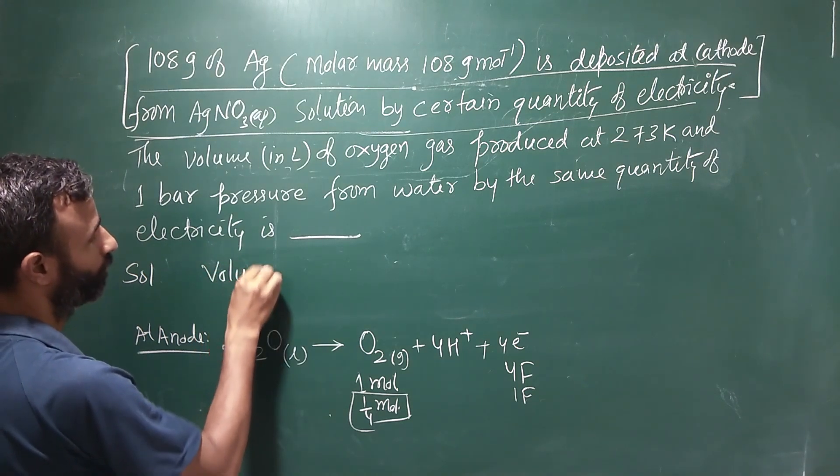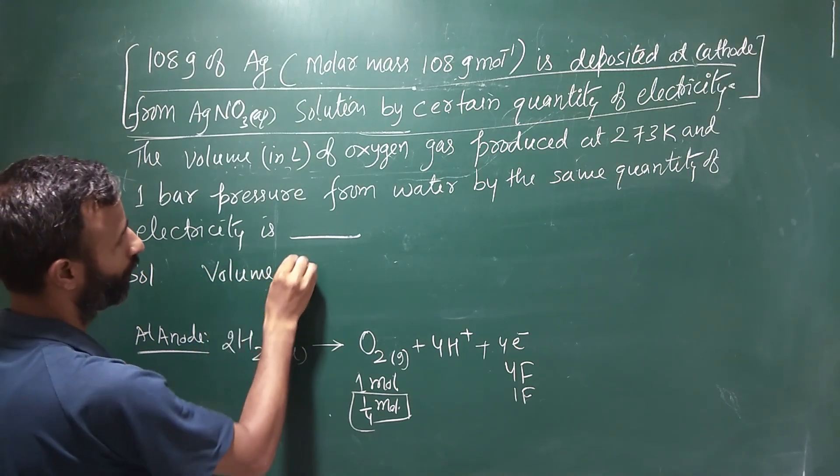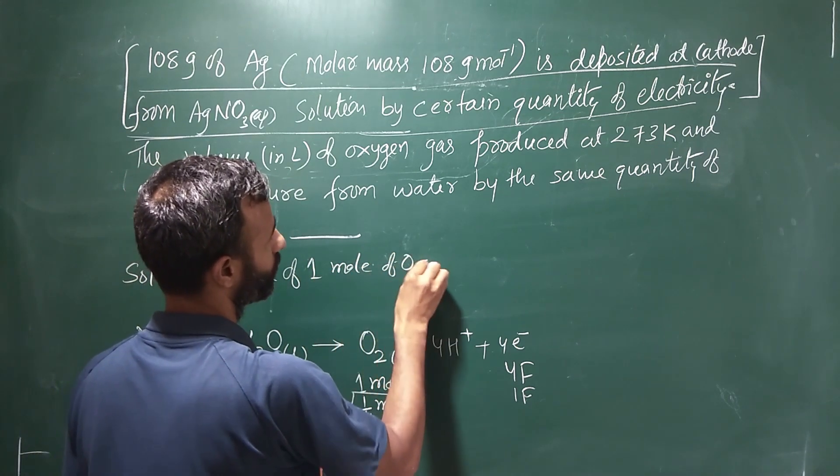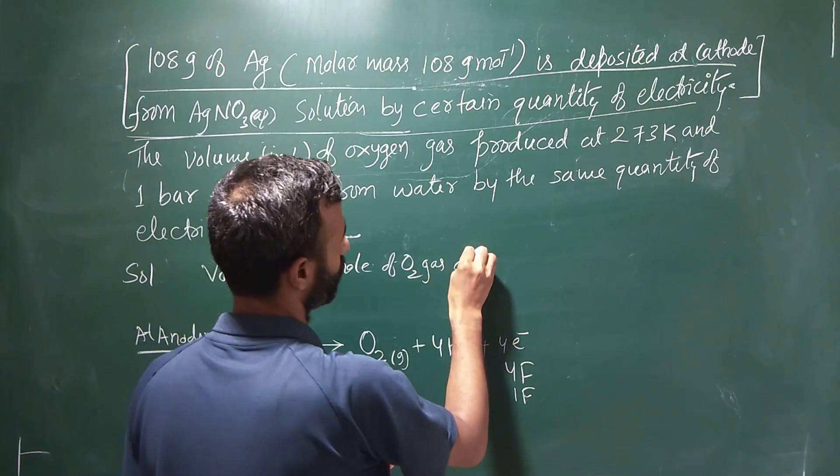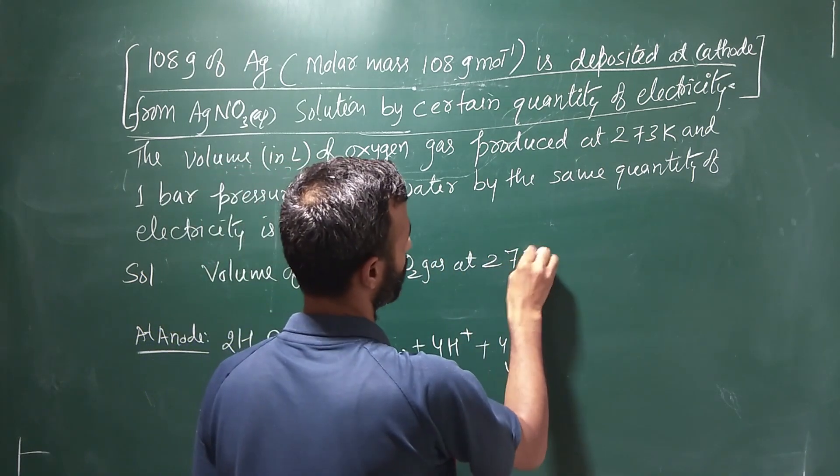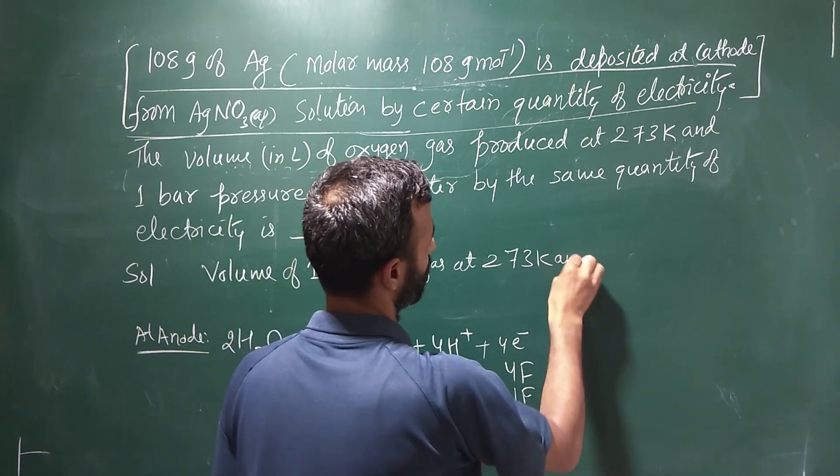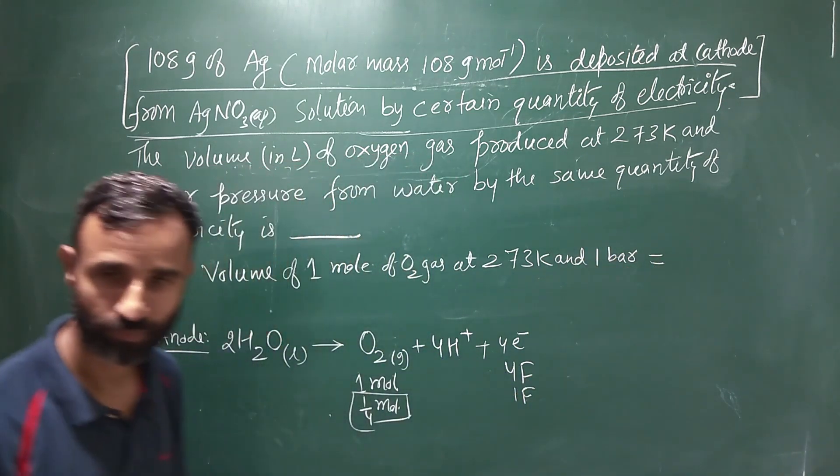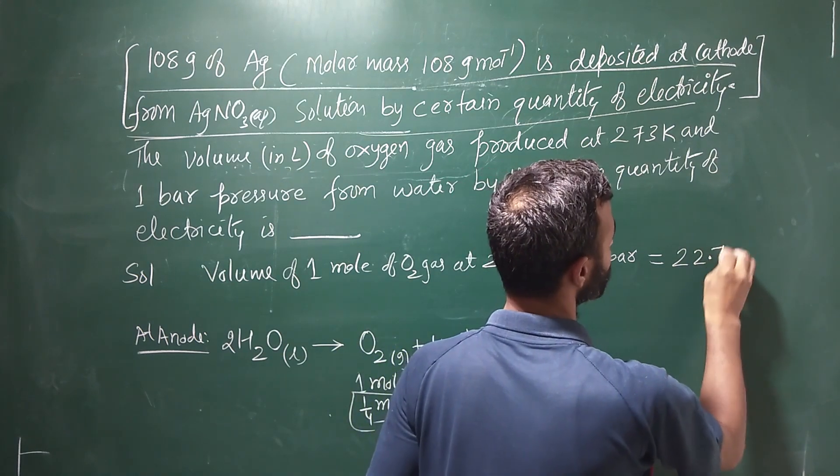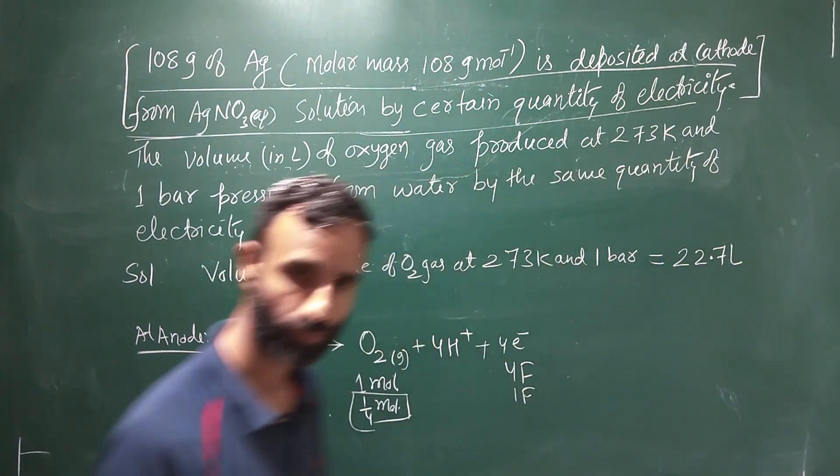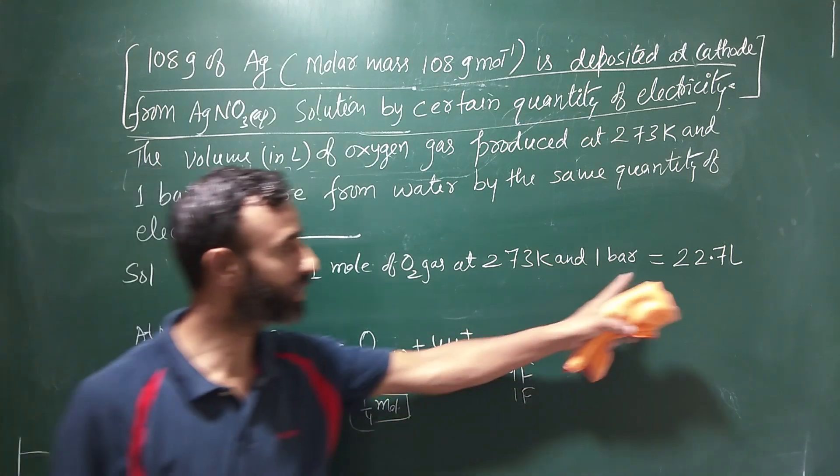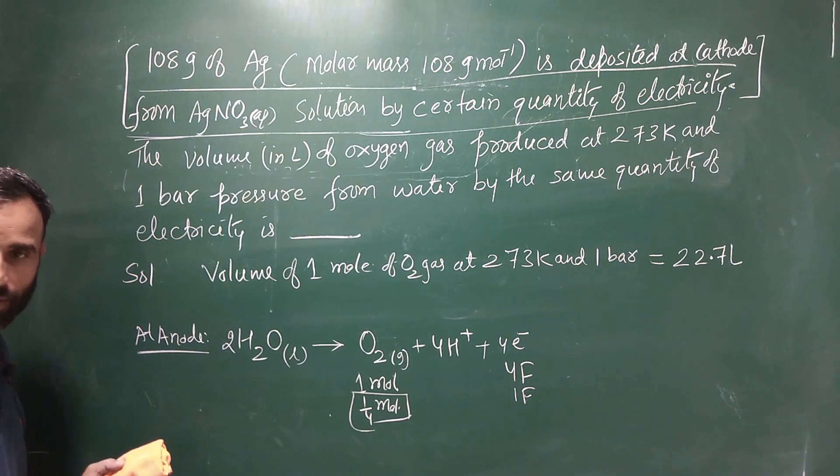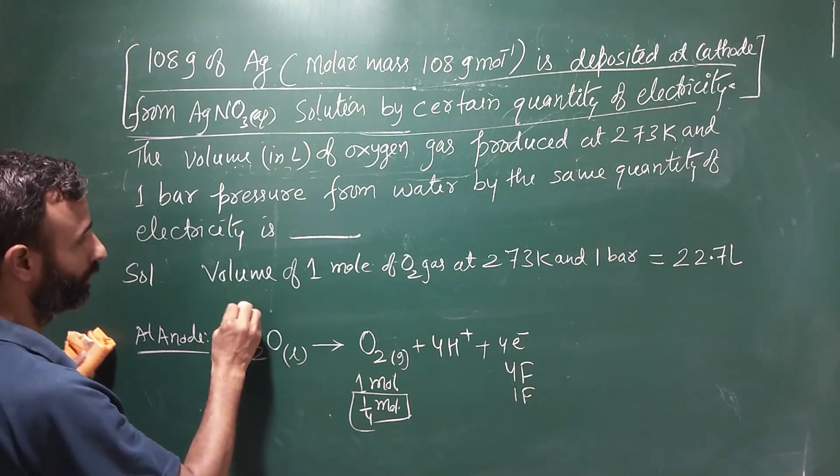Volume of 1 mole of O2 gas at 273 kelvin temperature and 1 bar pressure is 22.7 litre. At 1 atmosphere it is 22.4 litre, but at 1 bar it is 22.7 litre. So this is the volume.